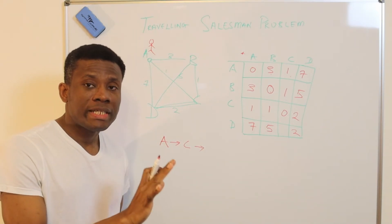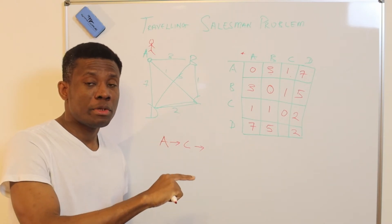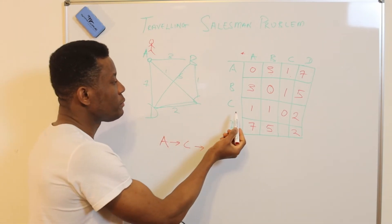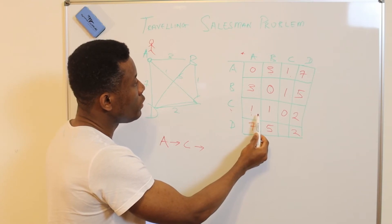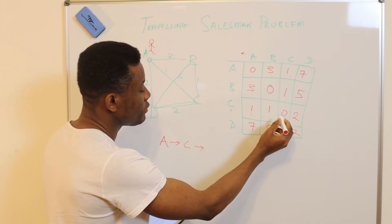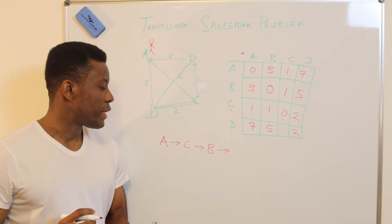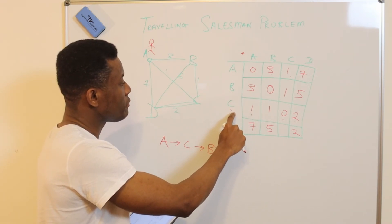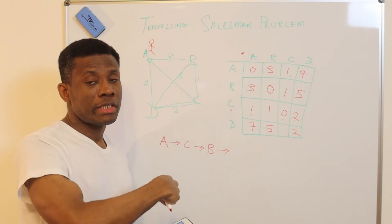We continue with the unexplored parts and choose the shortest path from C to the remaining unexplored locations, but not back to A yet. From C, we consider C to B and C to D — we skip C to C since we can't go from a place to itself. We choose C to B, which is one.